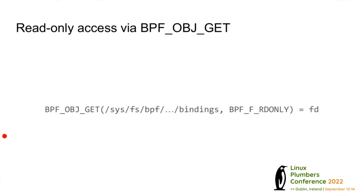Behind the scenes, what we do is run the syscall, give it a path, say we'd like a read-only file descriptor, and then the kernel checks access permissions and gives back a file descriptor that is read-only.